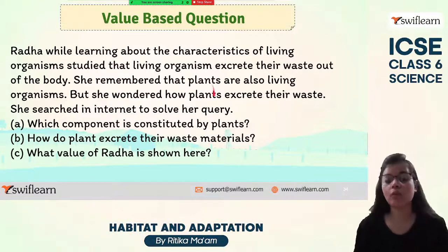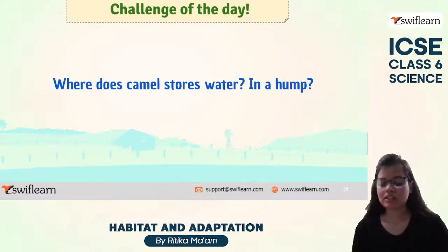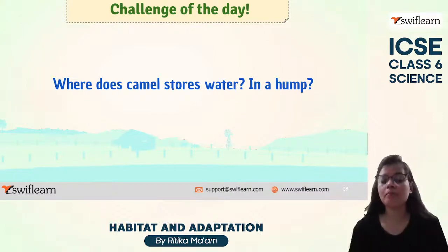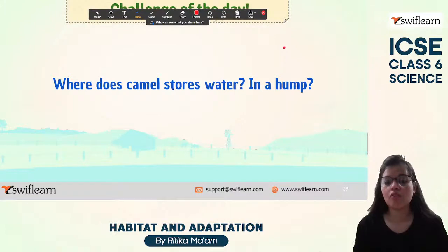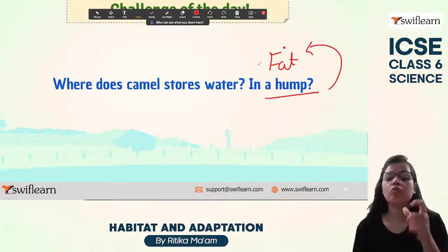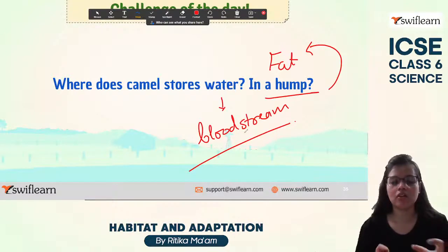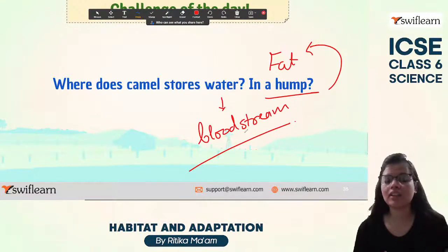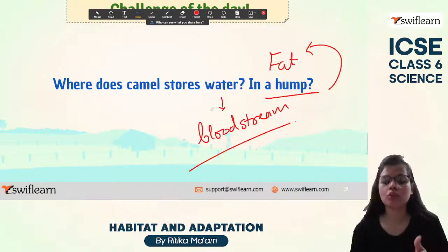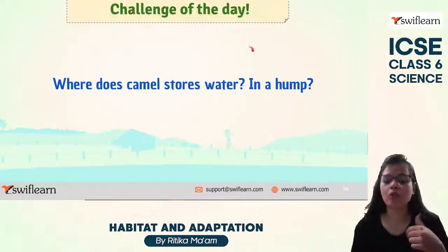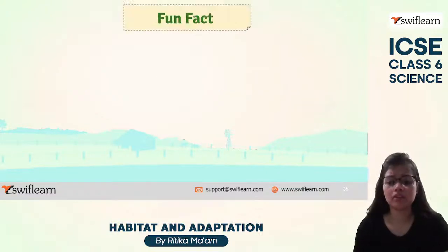Challenge of the day: where does a camel store water? There is a common misconception that camels store water in their hump — but that is incorrect. In the hump, camels actually store fat. Water is stored in the bloodstream of the camel. What happens is the camel can drink many gallons of water at one time, which is stored in its bloodstream, while fat is stored in the hump.